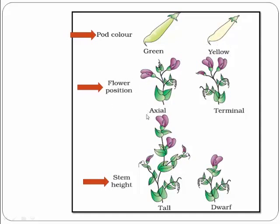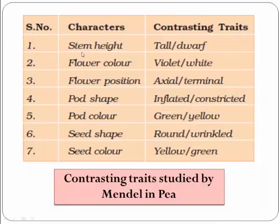The sixth trait is flower position — axial or terminal. You can see the flower is placed in the axial position here, and in the case of terminal it is placed at the end. The axial position is the dominant trait and the terminal position is the recessive trait. The seventh and last characteristic is stem height — either the garden pea is tall or it is dwarf. Tall is the dominant trait and dwarf is the recessive trait. These are the seven characteristics that were studied by Mendel in garden pea.